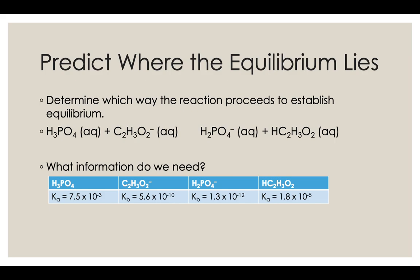The acetate ion is acting like a base — a proton acceptor — and acetic acid is its conjugate acid. So both H3PO4 and HC2H3O2 are acting like acids in that problem, depending on whether you picture the reaction going right or left. The acetate ion and H2PO4⁻ are both acting like bases. We need to compare the Ka and Kb values of those four substances to identify the stronger and weaker acids and bases.